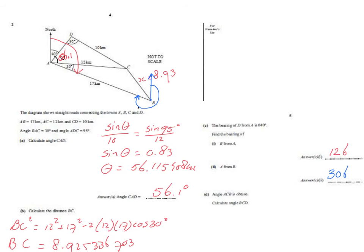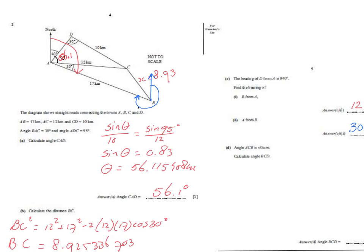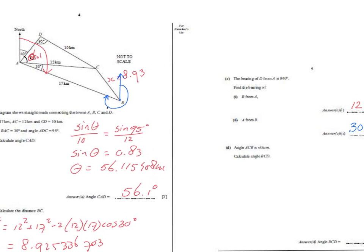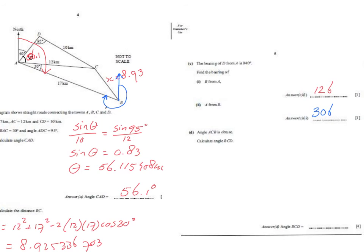The last question, worth four marks: angle ACB is obtuse — they tell us this for a reason. Calculate angle BCD. Angle BCD consists of two parts: angle DCA plus angle BCA. To find angle DCA, I look at triangle ACD — its internal angles sum to 180°, so 180 minus 95 minus 56.1 gives angle DCA = 28.9°.